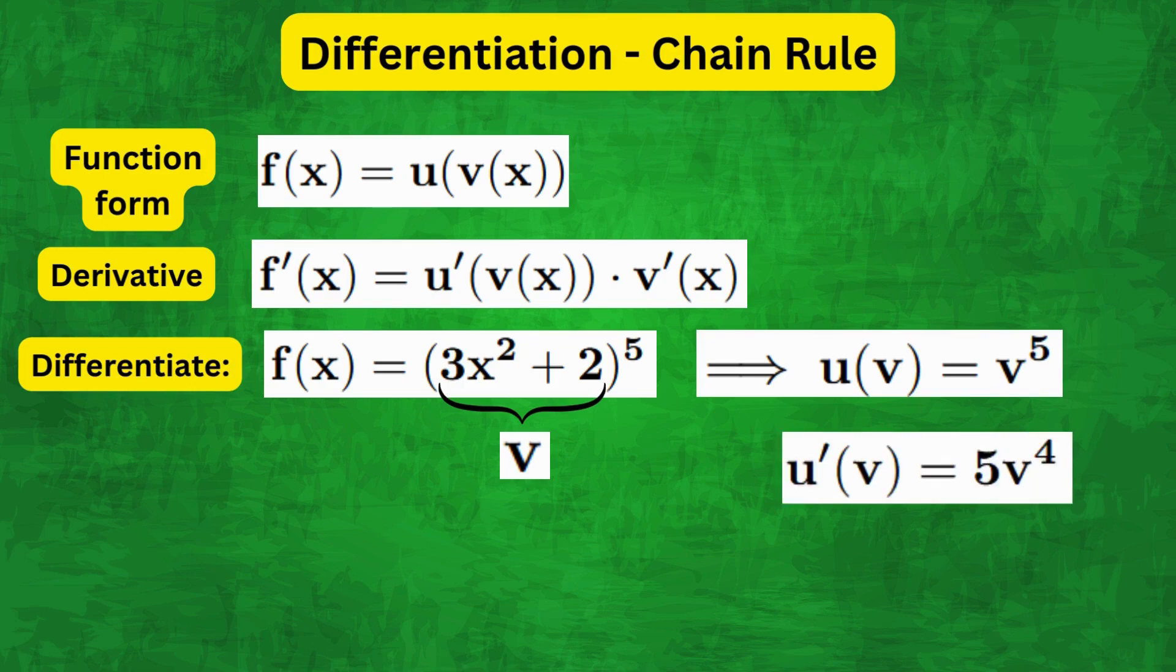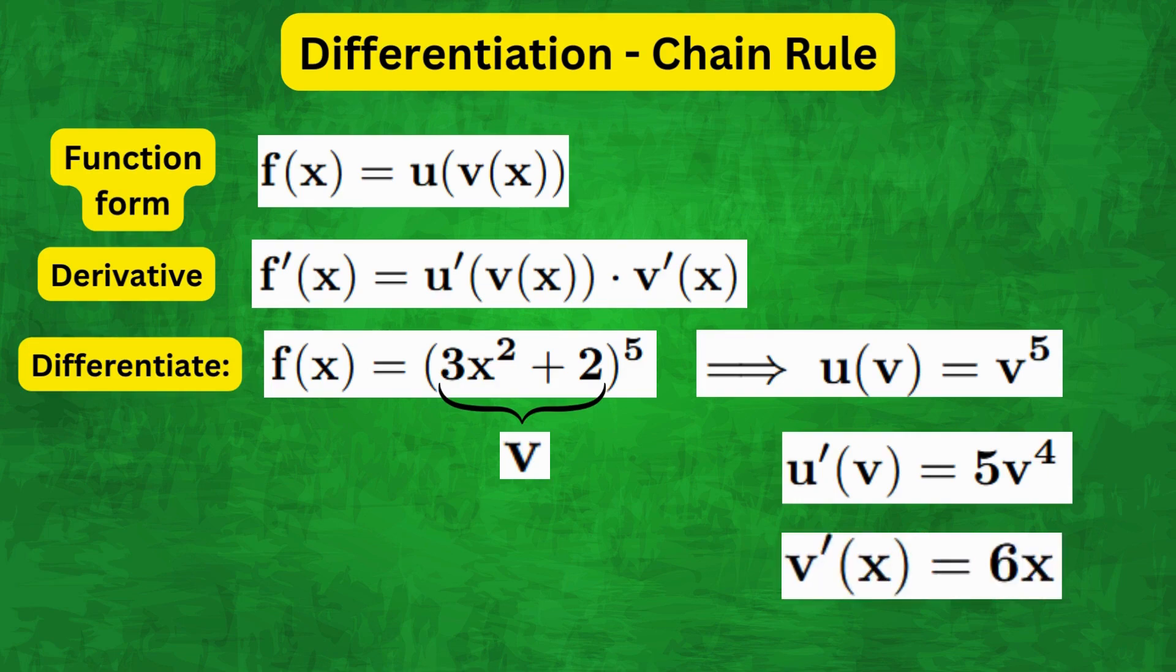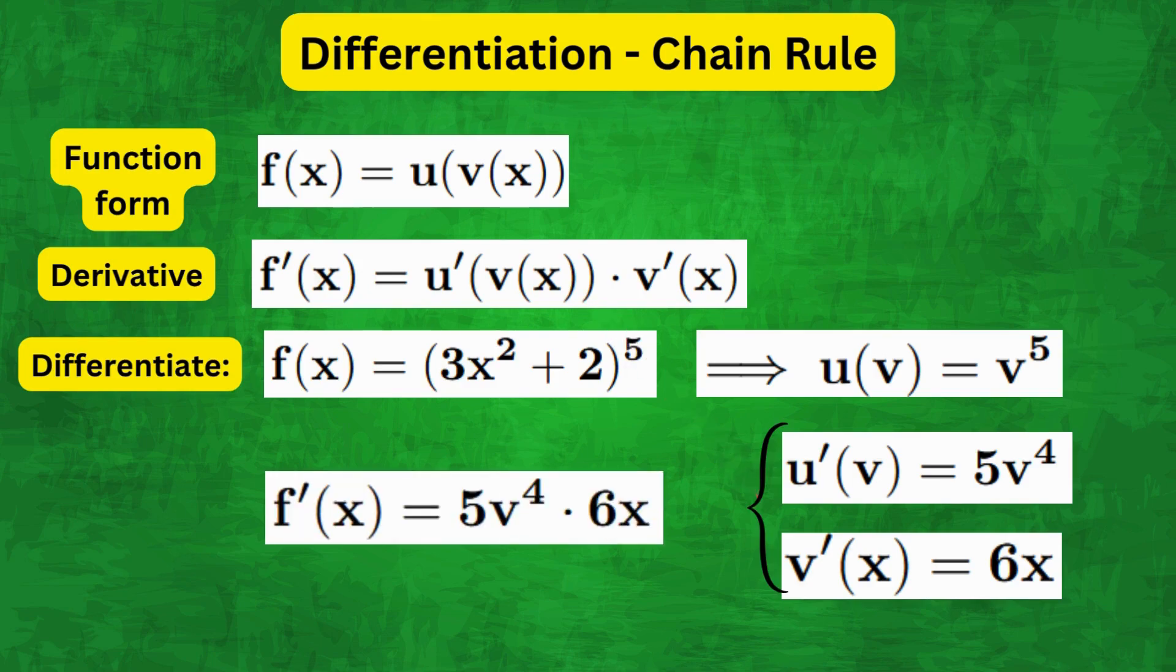Now u'(v) equals 5v^4 and v'(x) is equal to 6x. Then using the chain rule, we get f'(x) equals 5v^4 times 6x.